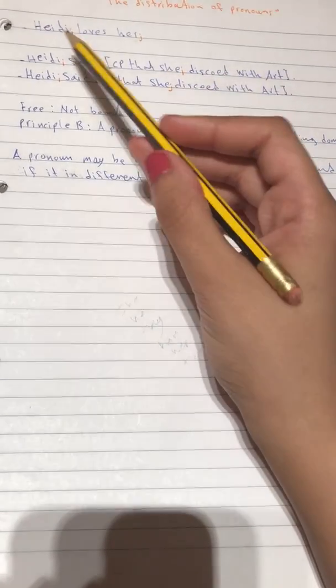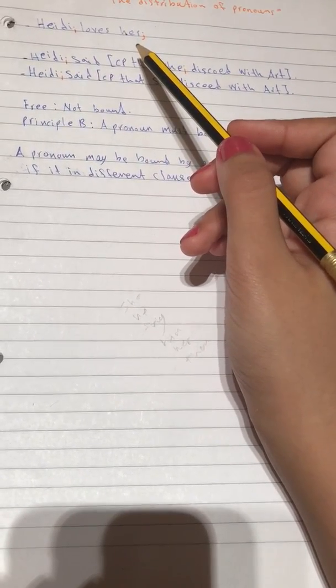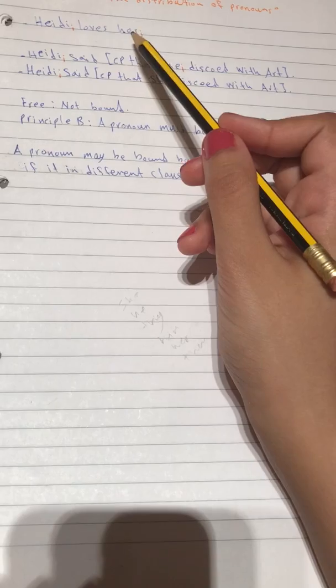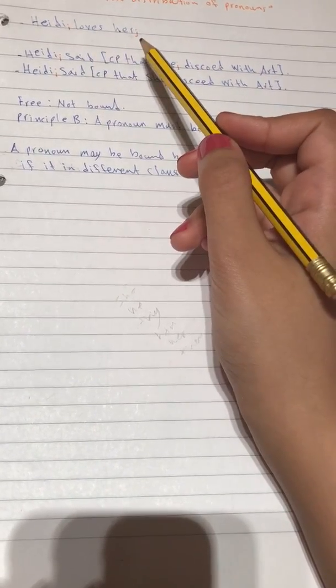So you know the difference between pronouns and anaphors. Look at this example: Heidi loves her. Actually her refers to someone else not Heidi itself. Why is that? Because we have different endings.